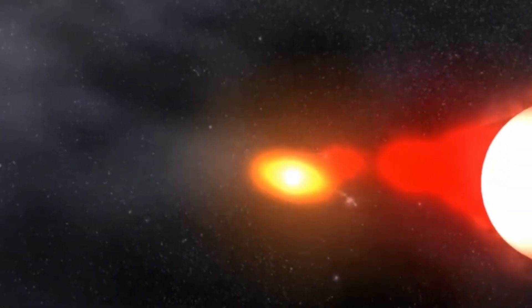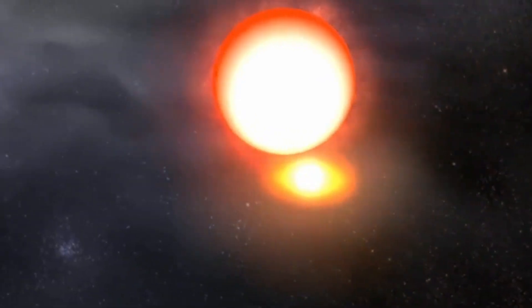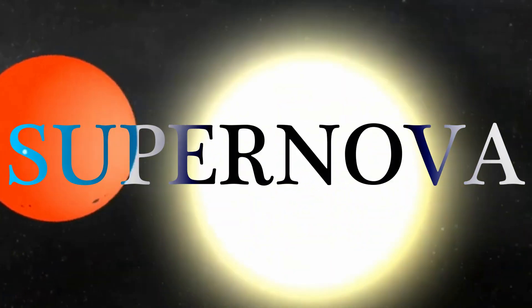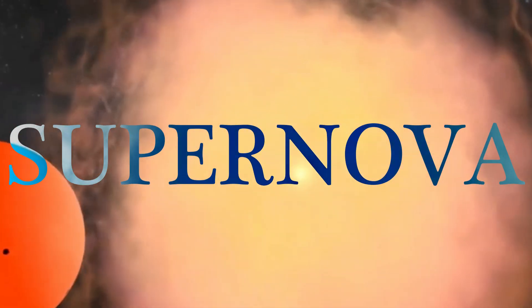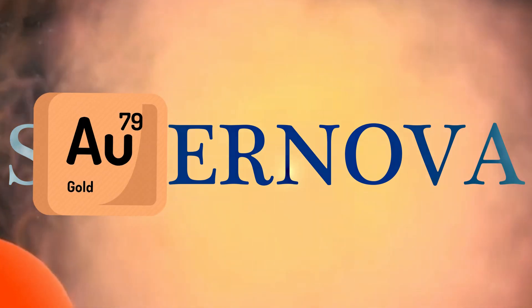When a giant star runs out of fuel, it collapses under its own gravity and explodes in a supernova. This explosion is so powerful that the extreme conditions that follow create heavier elements, like gold, uranium, and platinum.